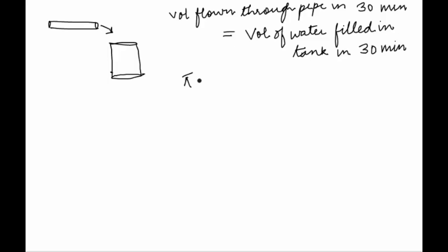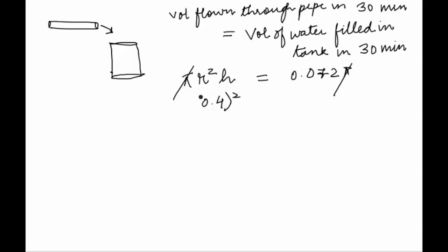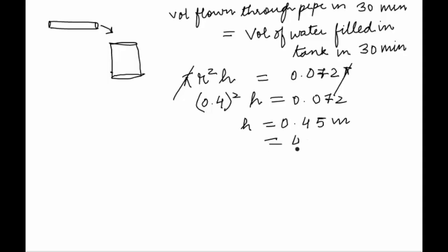Therefore, π r squared of the cylinder times height x will equal the volume of water filled in the tank in 30 minutes. So π into (0.4) squared into x equals 0.0725. Pi cancels out, and with r equal to 0.4, we get 0.16x equals 0.0725, so x comes out to be equal to approximately 0.45 meters, or 45 cm. So the rise in water level in the cylindrical tank is 45 cm.